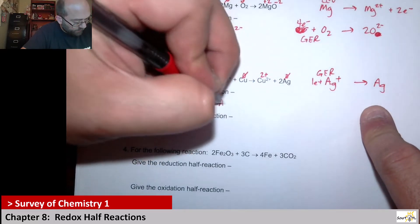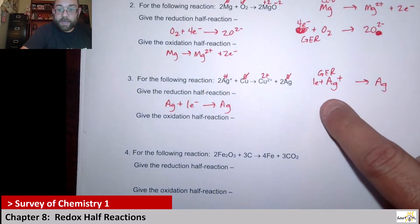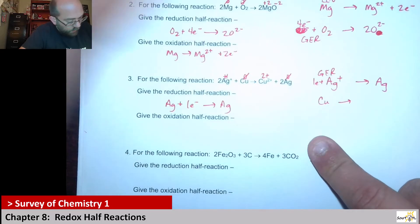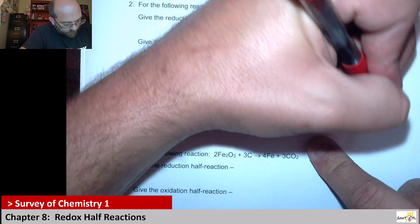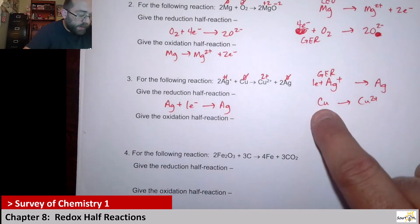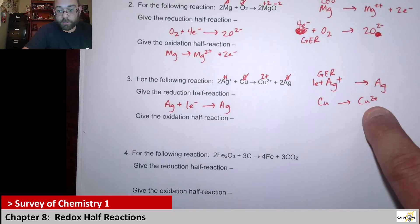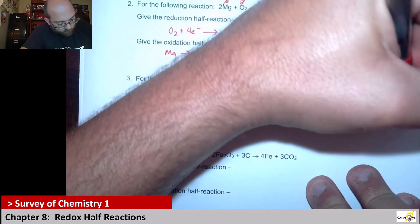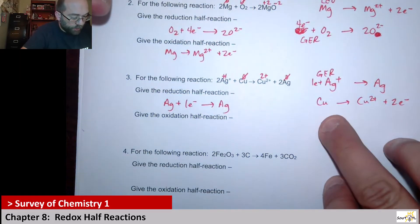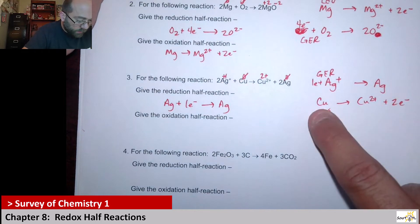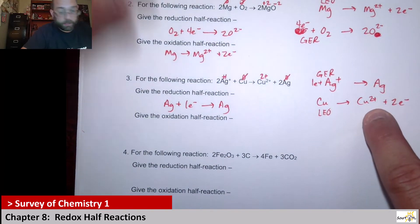So the reduction half reaction is Ag⁺ plus one electron gives me elemental silver. Next, looking at copper: copper elemental going to copper two plus. I need to add electrons to where I have the same charge on both sides. I have zero here and a plus charge there. So if I'm adding negative charges, they go on the product side — plus two electrons. That's the oxidation. Is that a LEO type scenario? Yes — it goes from zero to plus two, so copper did lose electrons.